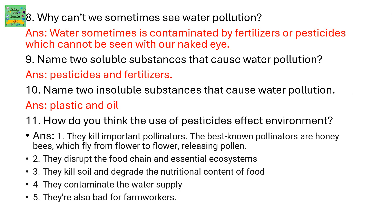Here are the answers for the last four questions. Why can't we sometimes see water pollution? Water is sometimes contaminated by fertilizers or pesticides which cannot be seen with our naked eyes because they get dissolved in the water. Name two soluble substances that cause water pollution: pesticides and fertilizers. Name two insoluble substances that can cause water pollution: plastic and oil.